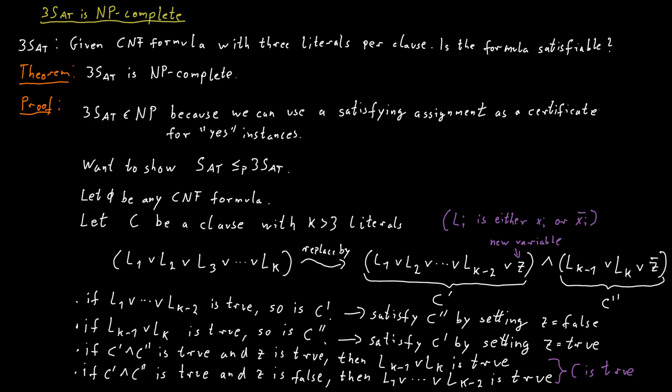So making this modification did not change whether our formula is satisfiable or not. What it did do, however, is change one clause that contained k literals into two clauses, both of which contained fewer than k literals. So we made it shorter.